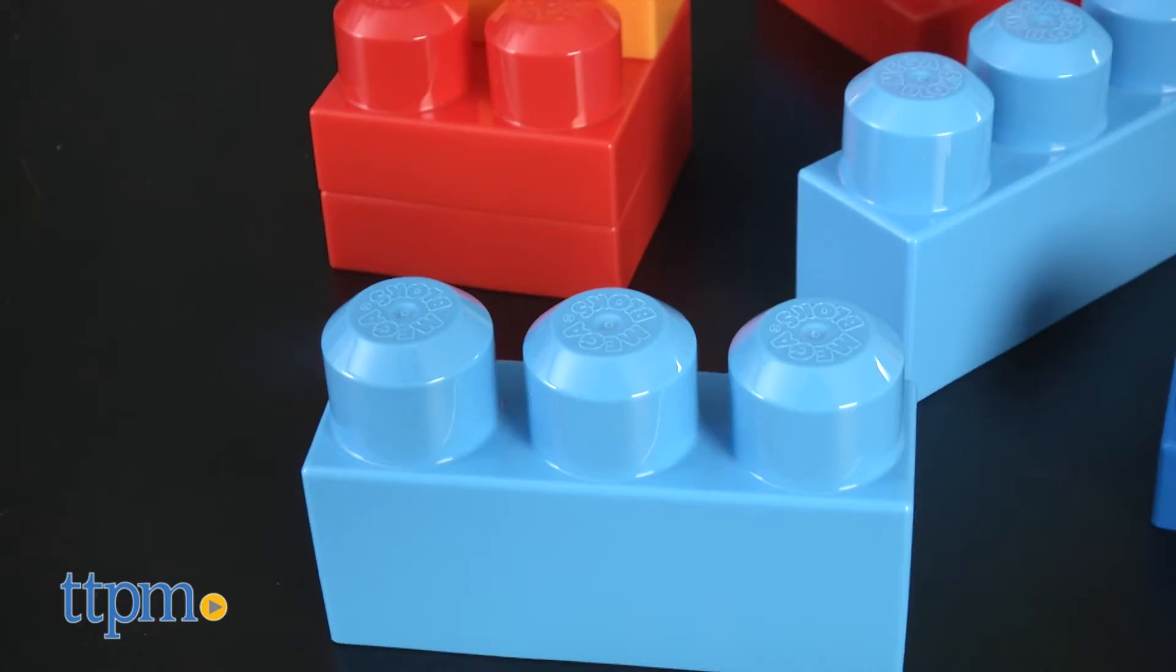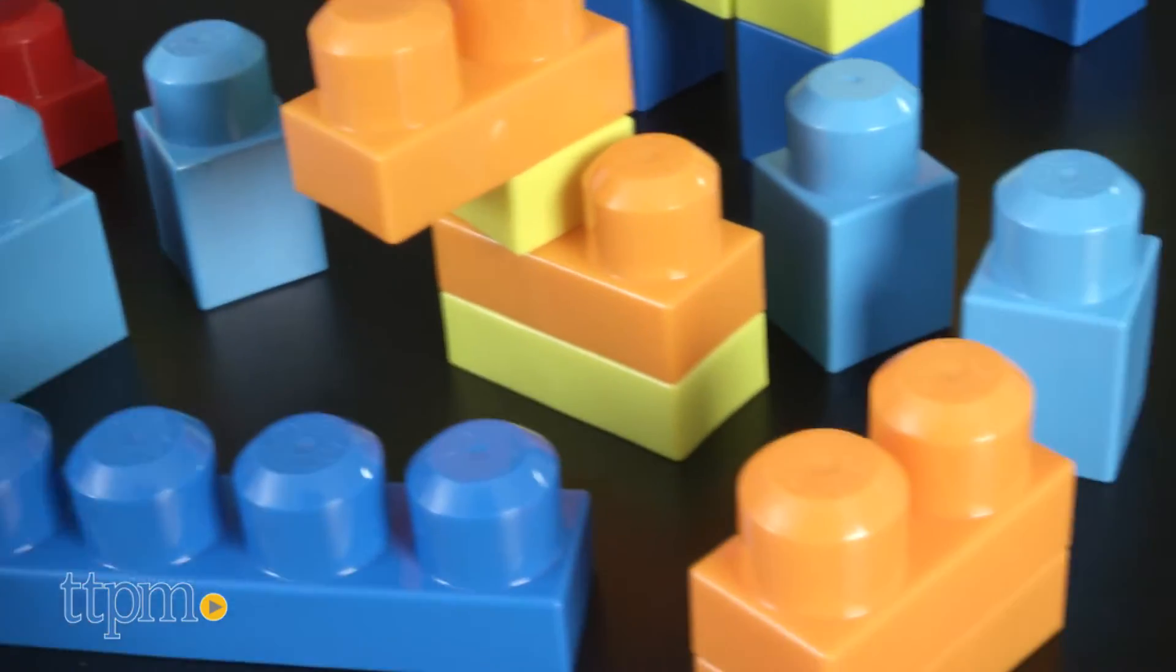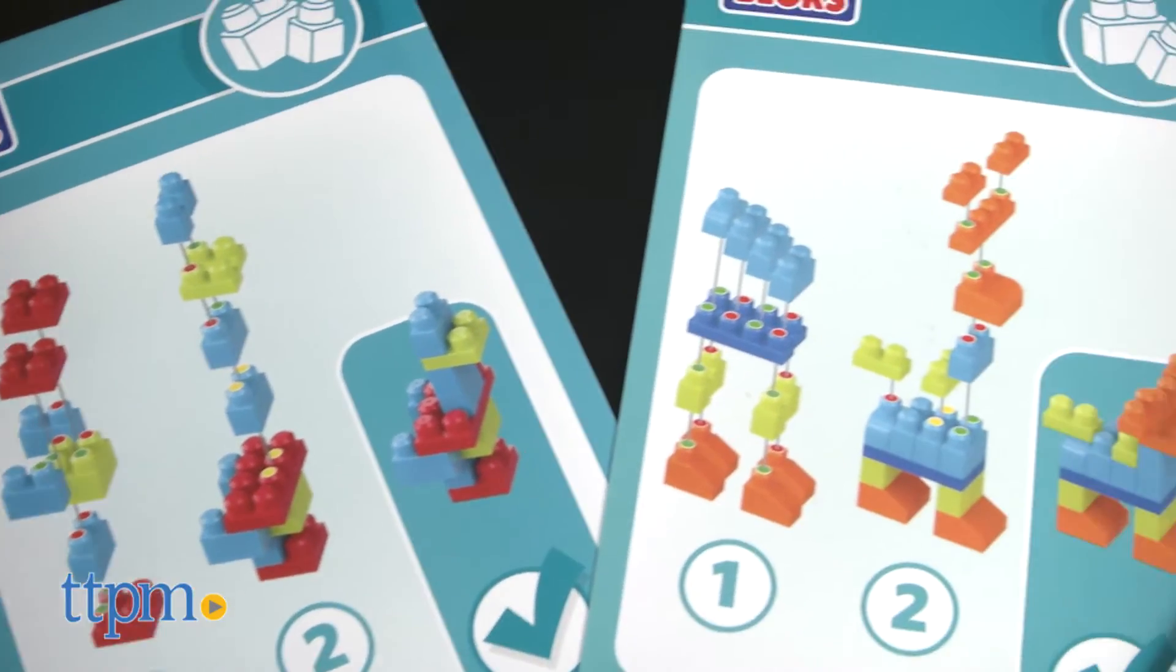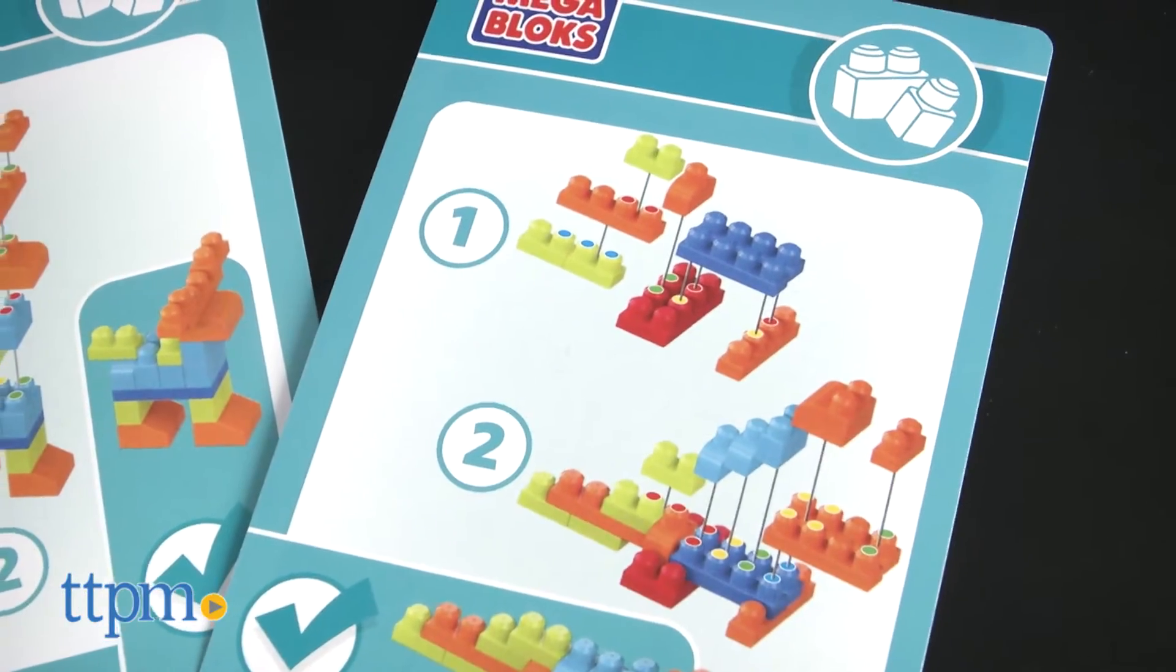This is a 100-piece preschool building set that comes in a sturdy portable bag with handle. To offer a bit of starter information and inspiration, this set comes with four double-sided building cards with instructions to make different creatures.